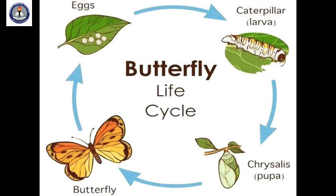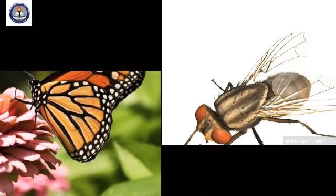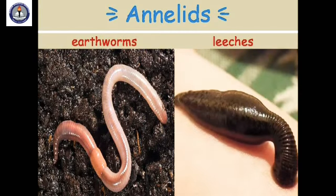After about 15 days, a beautiful butterfly comes out of the pupa. Moths, houseflies, mosquitoes, and beetles reproduce in this way, although their larvae do not look alike.